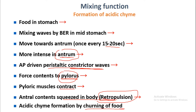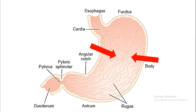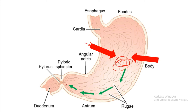Acidic chyme is formed by the churning of food inside the stomach — this is the mixing function of the stomach. Strong constriction waves inside the body move towards the antrum, pushing food material towards the antrum. Near the pylorus the waves become very strong, and the food is pushed from the body into the antrum towards the pylorus.